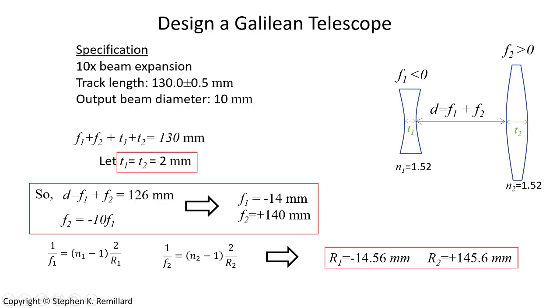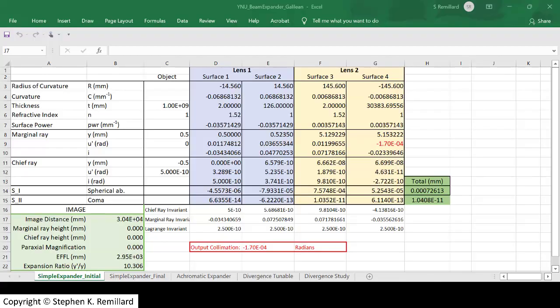And go into the YNU spreadsheet in Excel and use these numbers to analyze this setup and see if it is a beam expander with an expansion ratio of 10. To see how the YNU spreadsheet is constructed, see my video on how to construct a YNU spreadsheet.